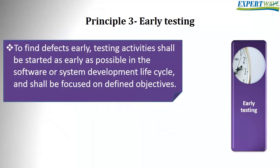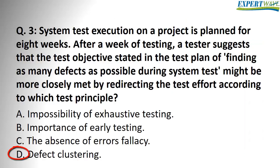Someone might say that early testing would also find more bugs because we started early. This is partially true, but the main objective of the early testing principle is to find defects as early as possible, because the earlier we find them the less it costs to fix them. Early testing is not directly related to finding more defects — it's related to lowering the cost of finding and fixing bugs.